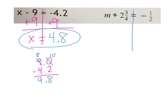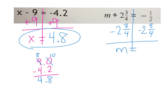So I'm going to subtract 2 and 3 fourths from this side and subtract 2 and 3 fourths from this side — keep it balanced. Adding 2 and 3 fourths and then subtracting 2 and 3 fourths cancels out and gives you zero, so I get M on that side.